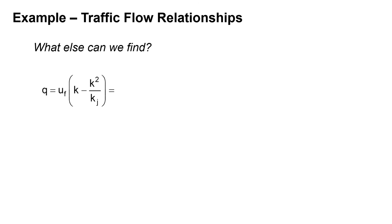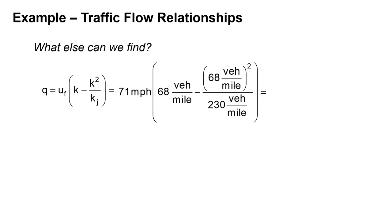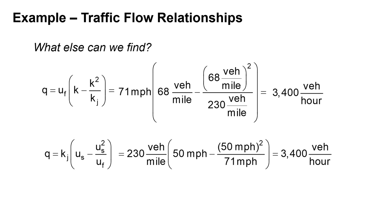We can also solve for the specific flow at the given conditions. Q equals U sub f times K minus K squared divided by K sub j: 71 times 68 minus 68 squared divided by 230, giving a flow of 3,400 vehicles per hour. Alternatively, using Q equals K sub j times (U minus U squared divided by U sub f): 230 times (50 minus 50 squared divided by 71) also gives 3,400 vehicles per hour, confirming both equations are consistent.